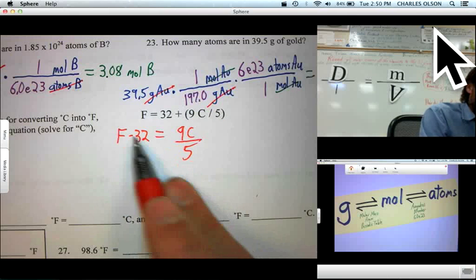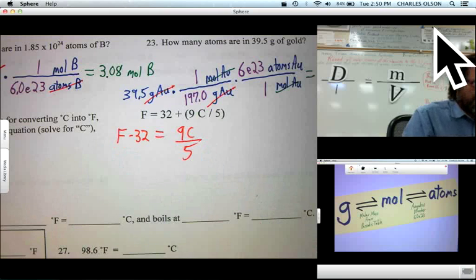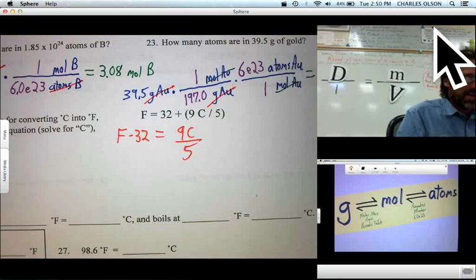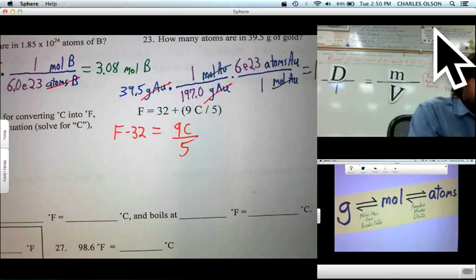And now how can I get both sides equal? Well, I multiply both sides by 5 over 9, and I've got my solution. C equals something. Check school notes for the complete answer.